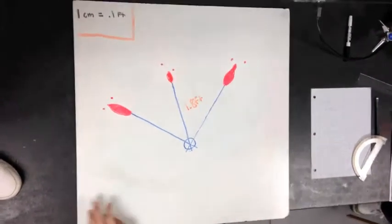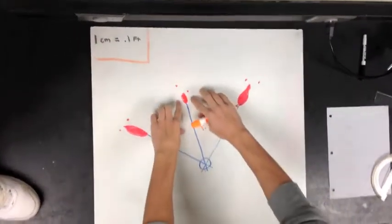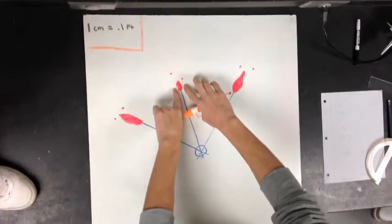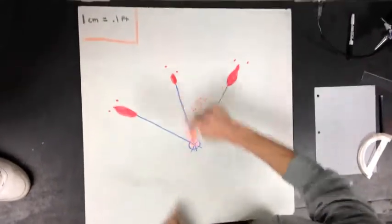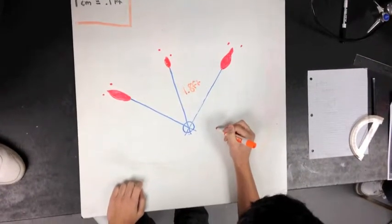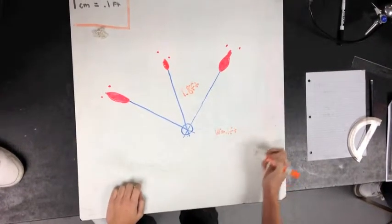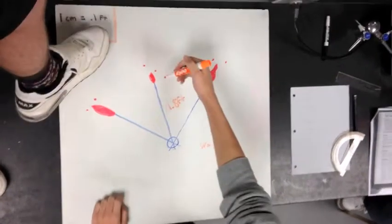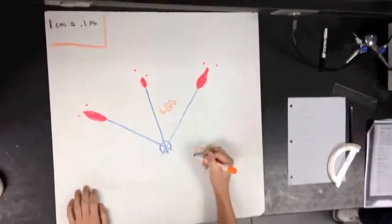And then you take the width of the blood spatter, which we know is 0.1 feet, which is the width. And then you have the length, which is 0.2 feet.